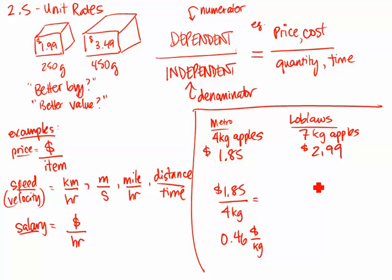With Loblaws, for example, I put the $2.99 in the numerator over 7 kilograms of apples. So then I divide $2.99 by 7, and I end up with 0.43, and then dollars over kilograms. Notice the units stay where they are. Dollars, kilograms, dollars, kilograms. My answer has the units dollars per kilogram and dollars per kilogram.